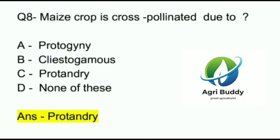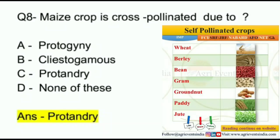Question 8. Maize crop is cross pollinated due to? A. Protogeny. B. Clistogamous. C. Protandry. D. None of these. And the answer is Protandry.